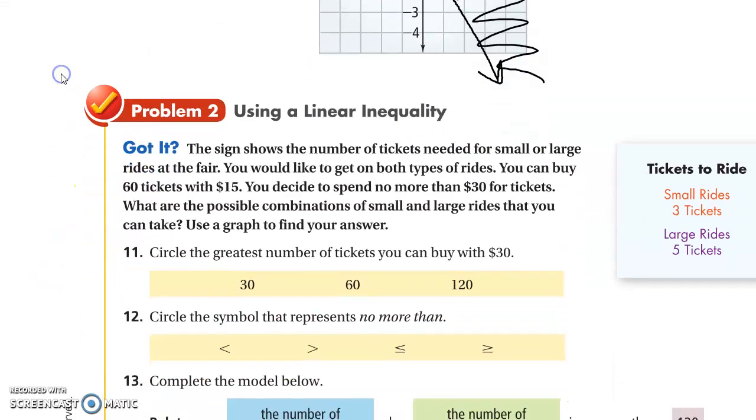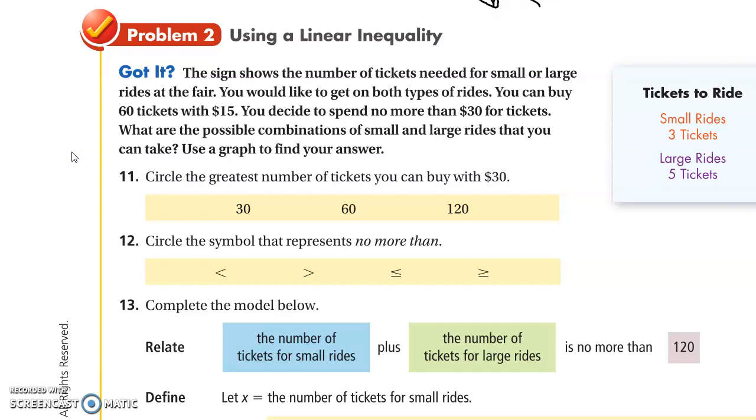Problem two, using your linear inequality. The sign shows the number of tickets needed for small or large rides at the fair. You would like to get on both types of rides. You can buy 60 tickets with $15. You decide to spend more than $30 for tickets. What are the possible combinations of small and large rides that you can take? Circle the greatest number of tickets you can buy with $30. So the answer is going to be 120. If 60 equals $15, $30 should equal 120. You just times it by two. Circle the symbol that represents no more than. So this is no more than, less than or equal to.